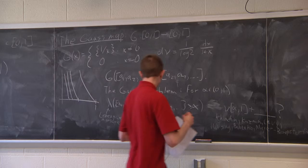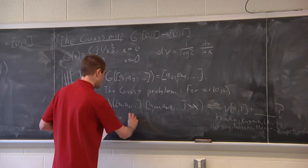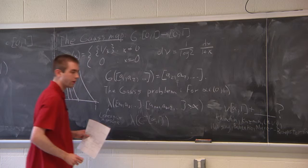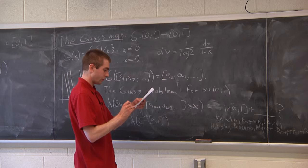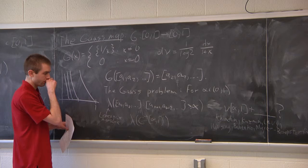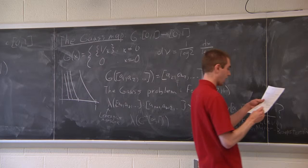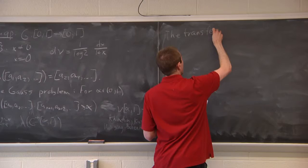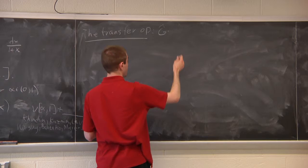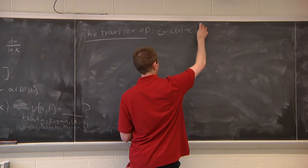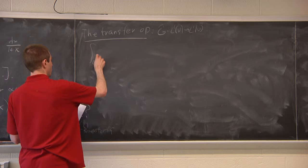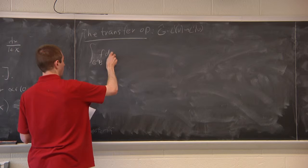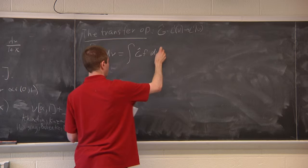In order to address this problem, one can notice that this set is simply equal to the Nth inverse image of the set [α, 1] in the Gauss map. One of the primary methods for addressing the asymptotics of that measure is to look at the transfer operator of the Gauss map, which I'll denote Ĝ.